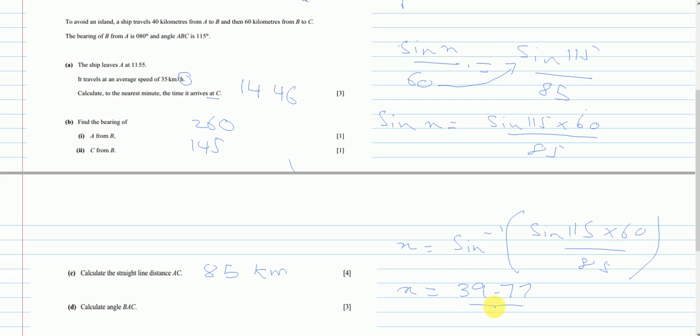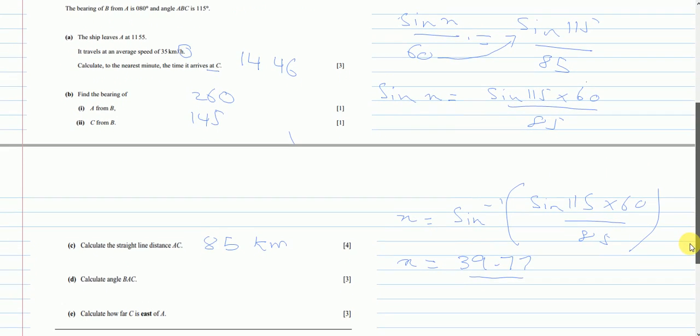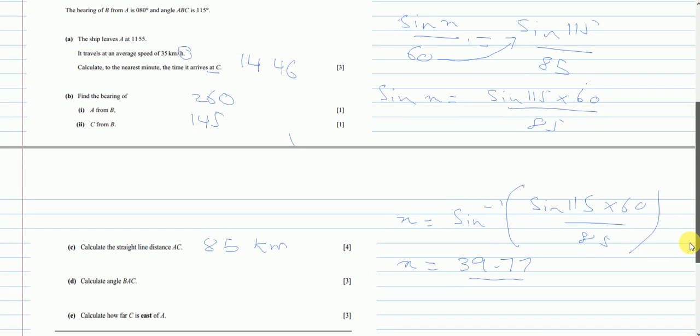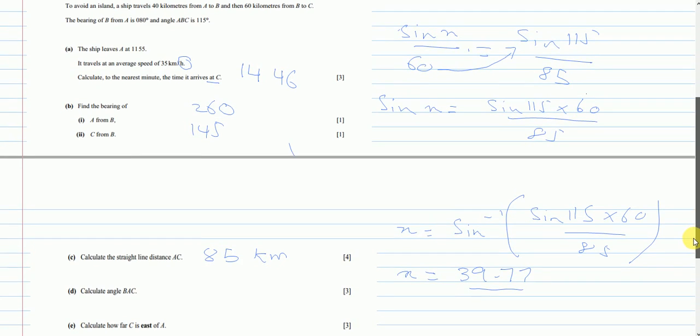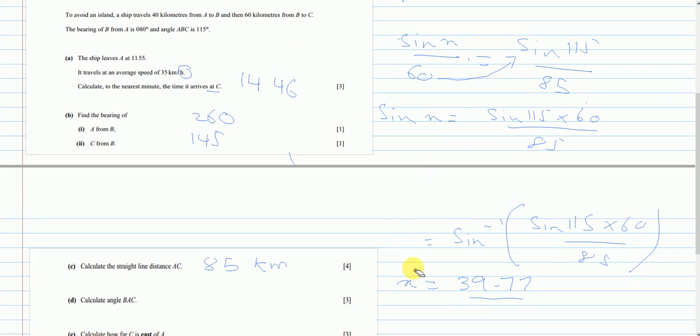And I will get x is equals to 39.77. So this will be my part D. 39.77. Now we actually had a range of value just because of the rounding errors so even if you had 39.81 till up to that it would have been correct.